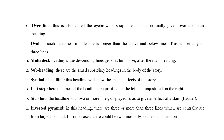Oval: in such headlines the middle line is longer than the above and below lines, giving the shape of an oval. It is normally used when there are three lines in a headline. Multi-deck headings: the descending lines get smaller in size after the main heading. Subheading: these are small subsidiary headings in the body of the story. Symbolic headline: this headline shows the special effects of the story.